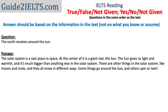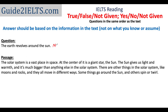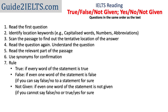A crucial point to remember is that your answers should be based solely on the information in the text, not on what you know or assume. A simple example: if the passage is about the solar system and the question is 'The earth revolves around the sun,' the answer would be Not Given, even though you know it is true, because it is based on your knowledge and not on the information provided in the passage.